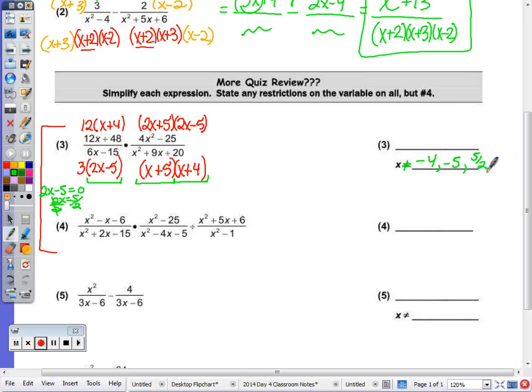Now to start canceling. To simplify, we factor and cancel. I can cancel a 2x minus 5 with a 2x minus 5, x plus 4 with an x plus 4, and 3 goes into 12 four times. So now multiplying straight across, we've got 4 times 2x plus 5 over x plus 5. That's going to be our answer.